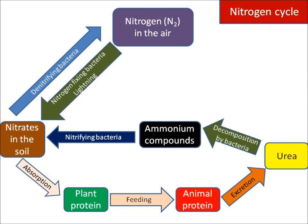So let's look at how that happens. Nitrogen in the air can get turned into nitrates in the soil by two different ways: either by nitrogen-fixing bacteria or by lightning. The nitrates in the soil can then get turned into plant protein because they're absorbed by plants and turned into plant protein.